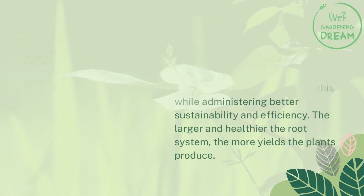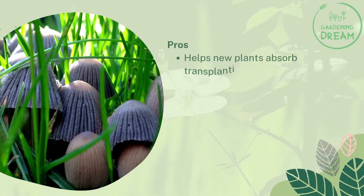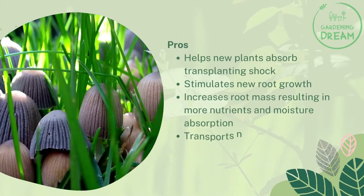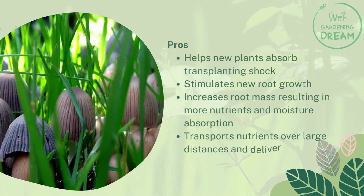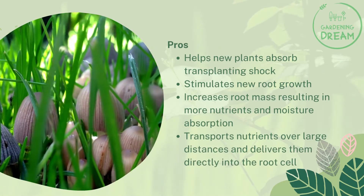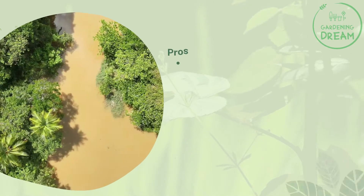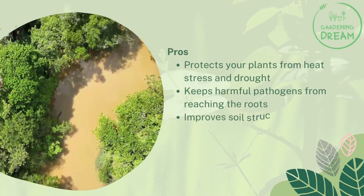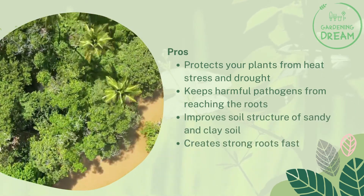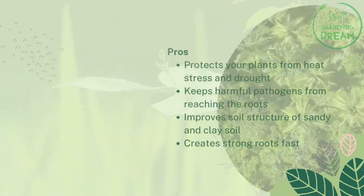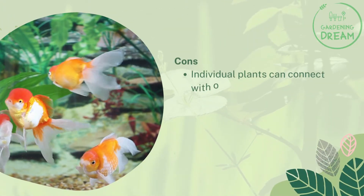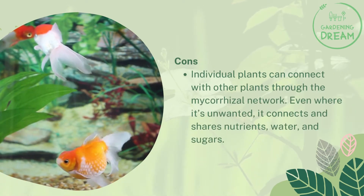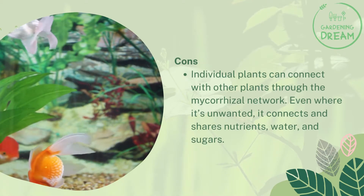The larger and healthier the root system, the more yields the plants produce. Pros: helps new plants absorb transplanting shock, stimulates new root growth, increases root mass resulting in more nutrients and moisture absorption, transports nutrients over large distances and delivers them directly into the root cell, protects plants from heat stress and drought, keeps harmful pathogens from reaching the roots, improves soil structure of sandy and clay soil, and creates strong roots fast. Cons: individual plants can connect with other plants through the mycorrhizal network, even where unwanted, sharing nutrients, water, and sugars.